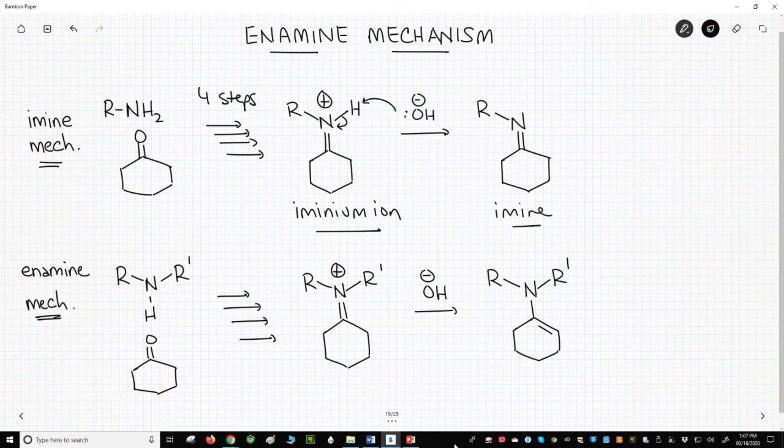The enamine mechanism is identical, identical except for this last step. The iminium ion formed from the secondary amine does not have a hydrogen on the nitrogen. We can't remove an N-H.